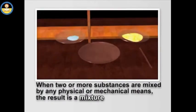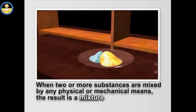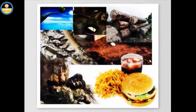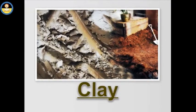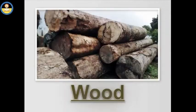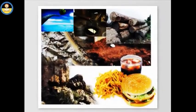A mixture is a form of matter which consists of two or more different pure substances in any ratio. Most of the naturally occurring matter is in the form of mixtures. Clay, seawater, food, wood, petroleum and rocks are some of the common examples of mixtures.